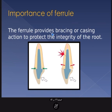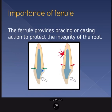The ferrule provides bracing action to protect the integrity of the root. With your post and core and crown in place, the crown covers the natural root structure and you prepare the finish line here. If your restoration margin is at the same level and you only have one millimeter down, there will be a vertical fracture at that area.